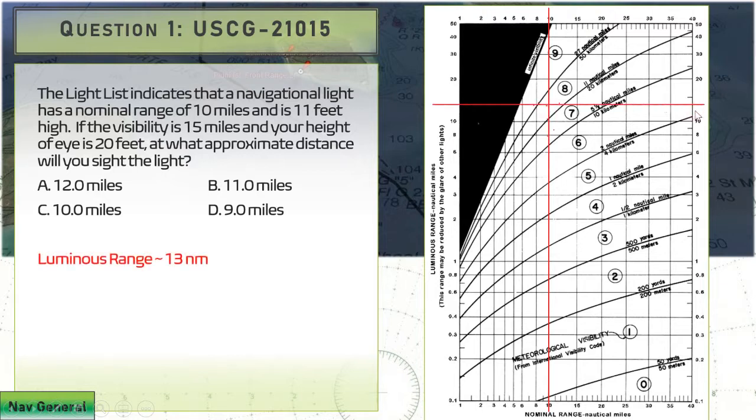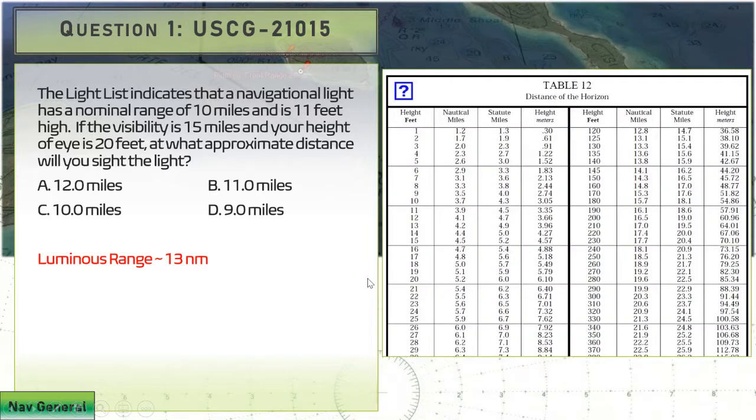We have an approximate value of about 13 nautical miles. That's our luminous range.